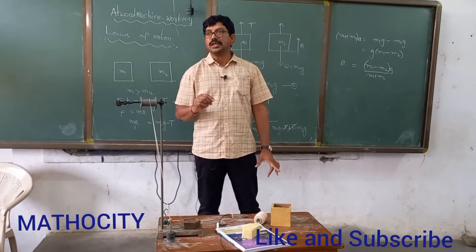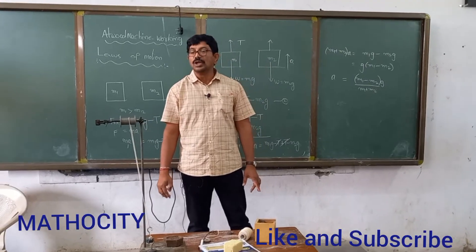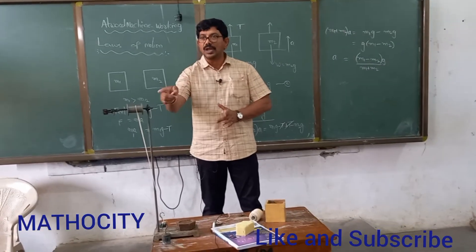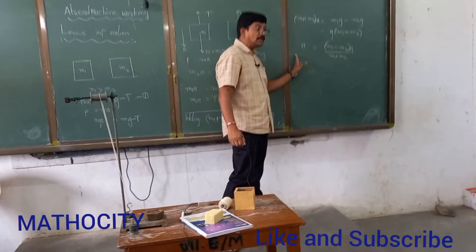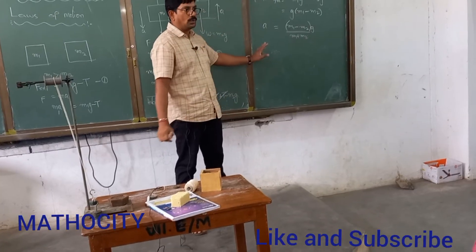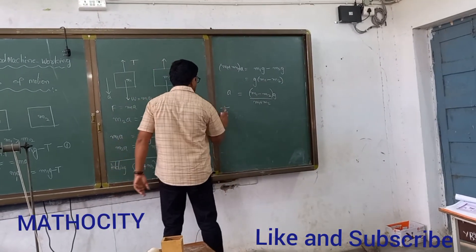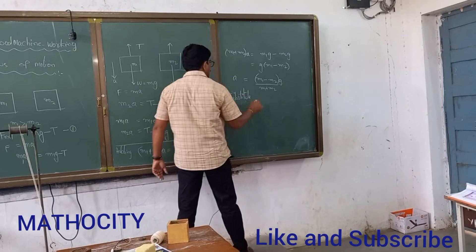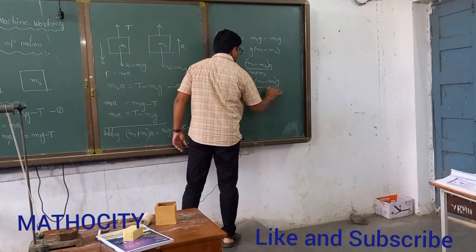This is Newton's second law. This Atwood machine is useful in making elevators and lifts — lifts and elevators work on the principle of the Atwood machine. To find the tensional force, we substitute the value of A equals (M1 minus M2)G divided by (M1 plus M2) into equation one.